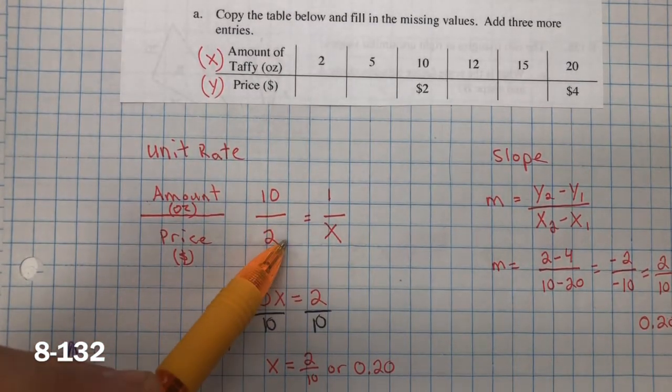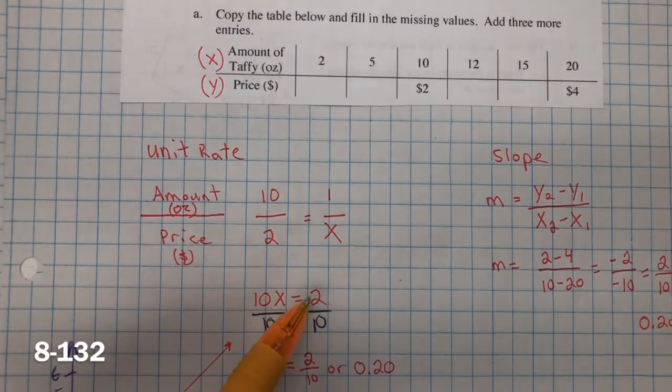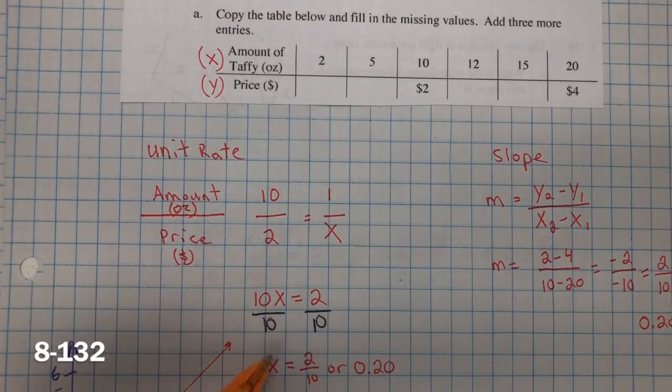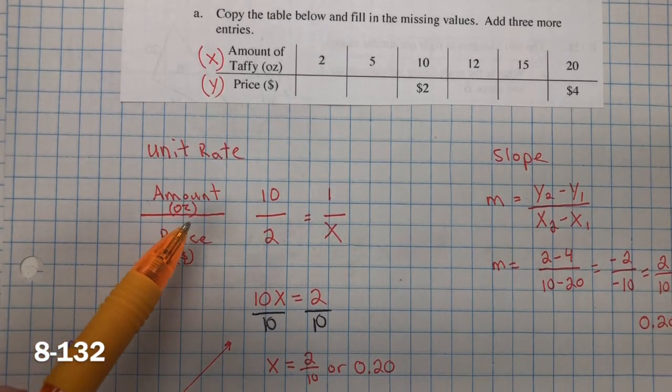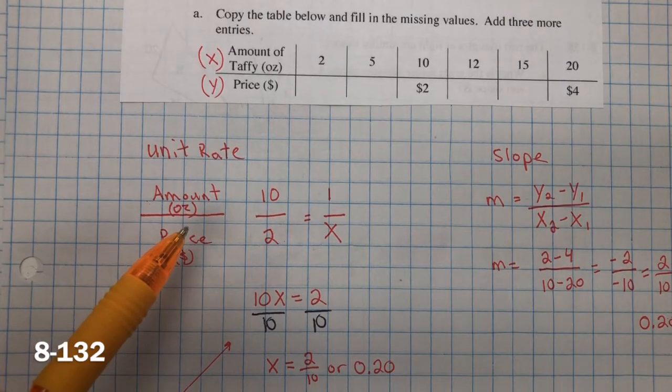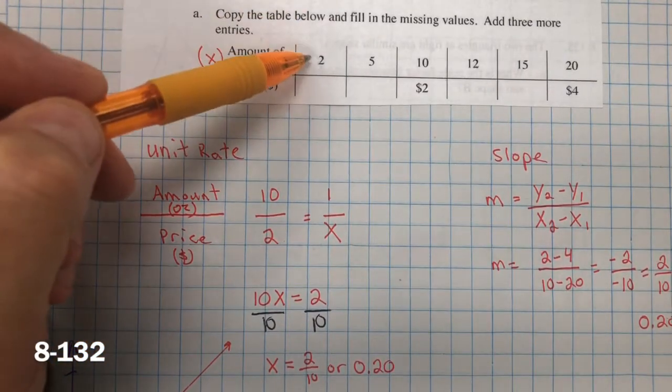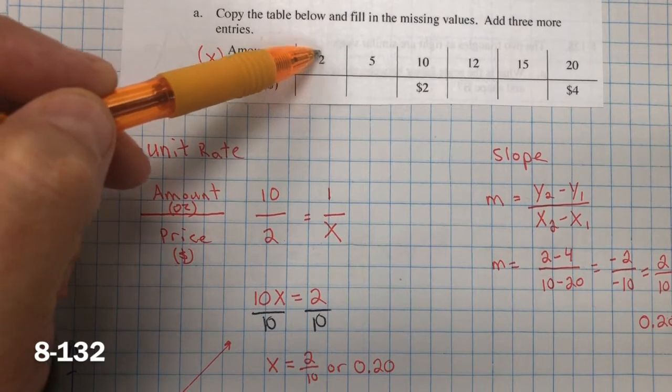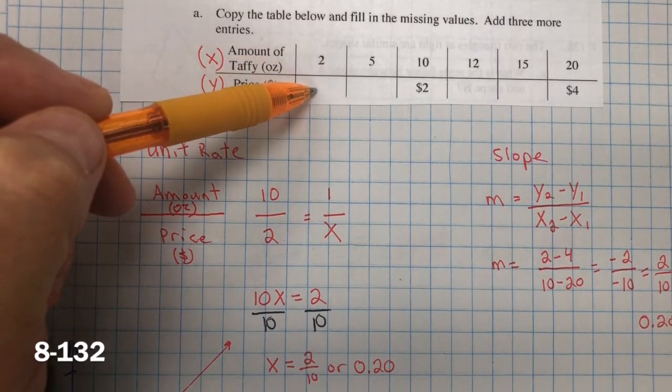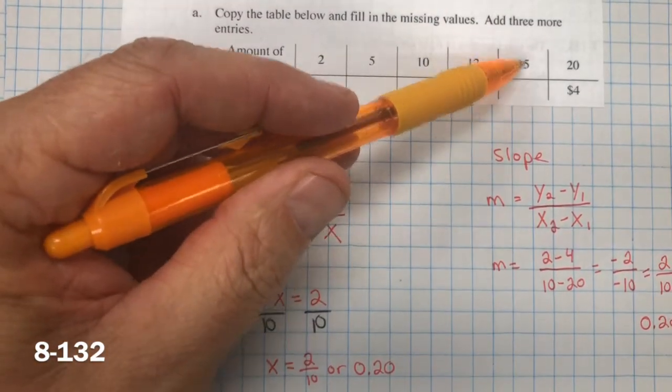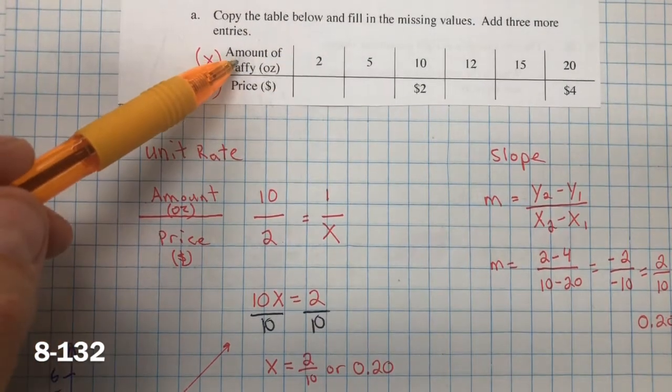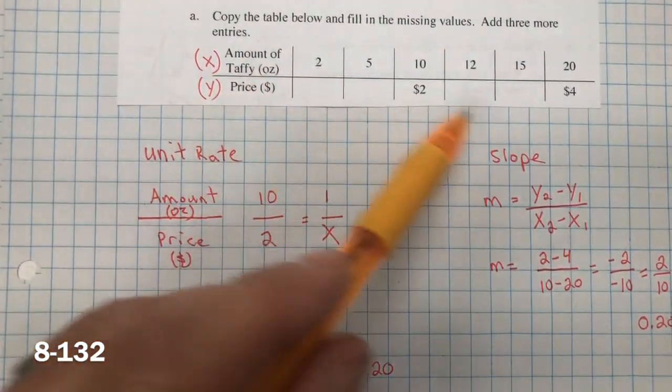We cross-multiply. 10 multiplied by x is 10x. 2 multiplied by 1 is 2. Divide both sides by 10, and x equals 2 tenths, or 20 hundredths, which equals 20 cents. So we know that one ounce of taffy costs 20 cents. Well, knowing that one ounce of taffy costs 20 cents, then we could fill this in, because it would be 2 times 20 cents, and 5 times 20 cents, 12 times 20 cents, and 15 times 20 cents. Finding the unit rate will allow us to find these missing values.